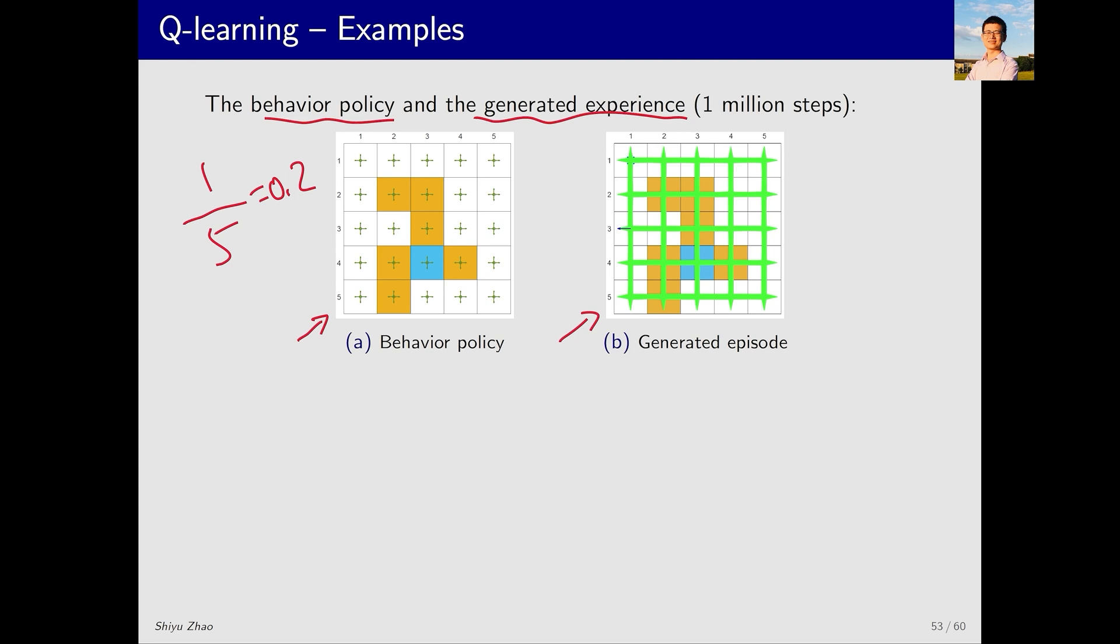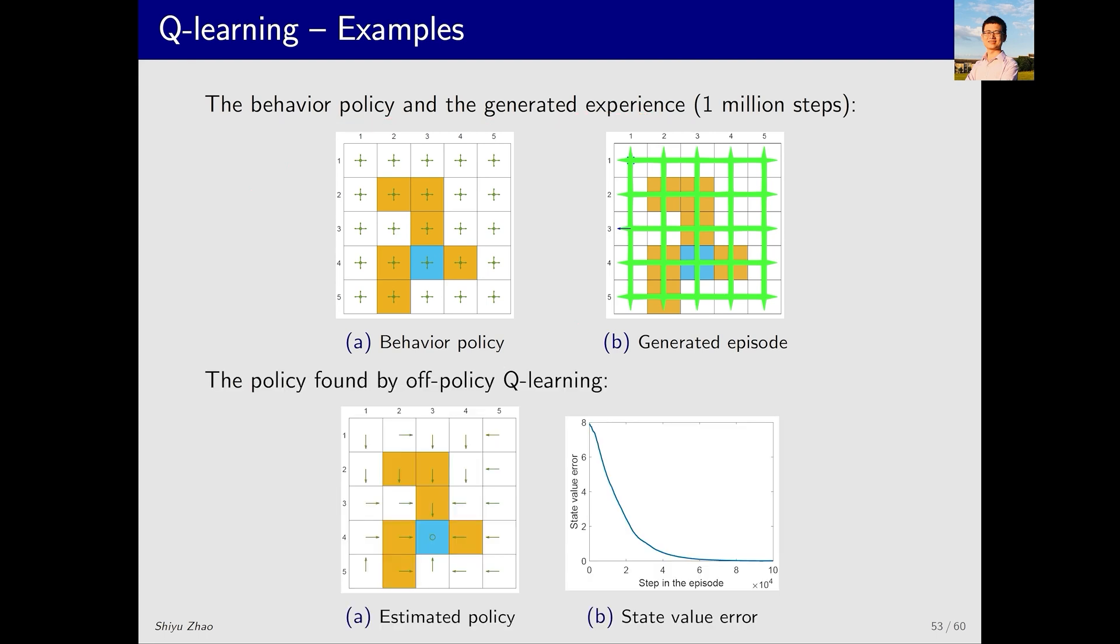Next, let's see how to use these samples to do Q-Learning. To use the data generated by this behavior policy, we must use the off-policy implementation of Q-Learning. What we can get eventually is a policy that is almost the same as the ground truth optimal policy that we just mentioned.